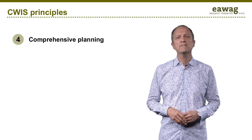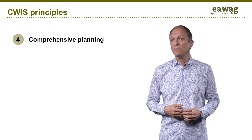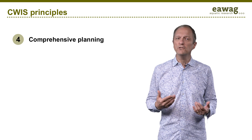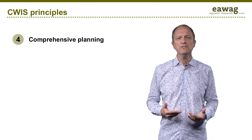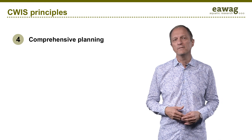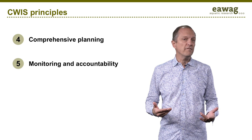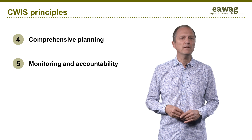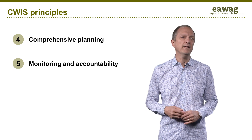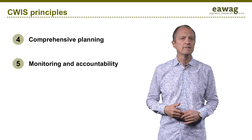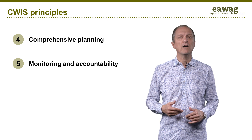Principle 4: Comprehensive Planning. Planning is inclusive and holistic, with participation from all stakeholders including users and political actors, with short and long-term vision, incremental perspective, and synergistic with other urban development goals. Principle 5: Monitoring and Accountability. Authorities operate with a clear inclusive mandate, performance targets, monitoring requirements, human and financial resources, and accountability.